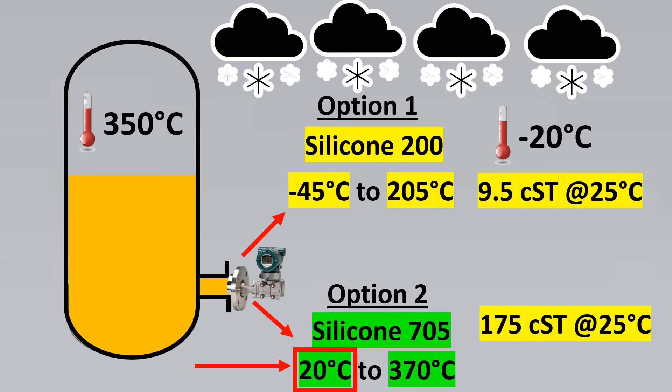So if we cool it down to minus 20 degrees Celsius, the fluid will be so viscous it will not be able to sense and transmit the pressure up till the pressure transmitter. So what do we do in such a case?